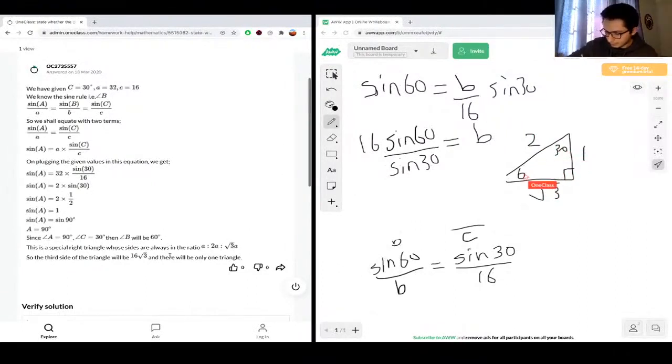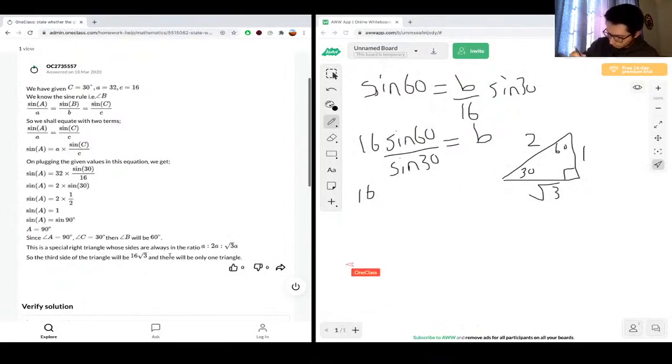Sorry, no, that's backwards. So we have 30 over here and 60. So sine 60, so opposite is root 3 over hypotenuse, so root 3 over 2, so we have 16 root 3 over 2. And then we have the sine 30, which is opposite over hypotenuse, so 1 over 2.